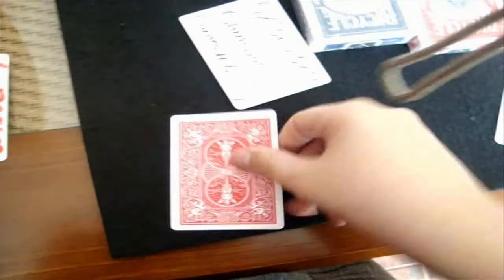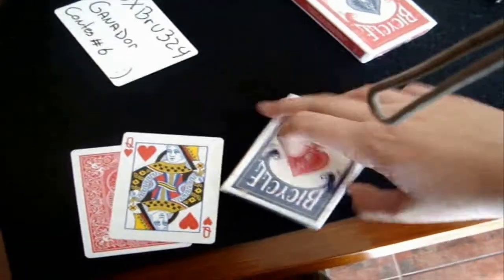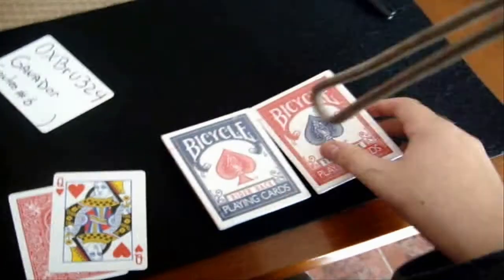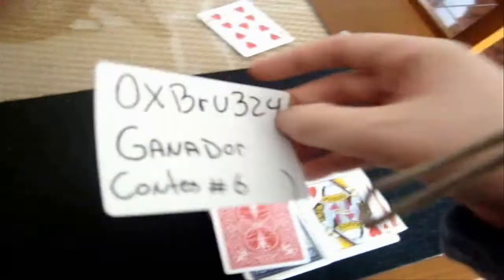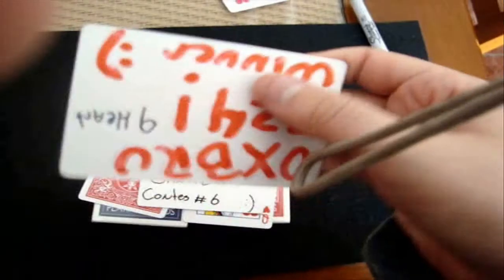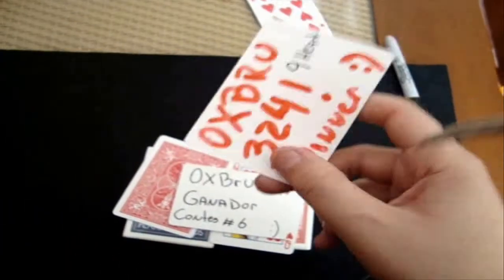So there you go so this is what you're gonna get. Two gimmicks, a red and a blue or a blue you can choose, and a signed playing card. And you will get this because I messed up okay this is a gift okay.